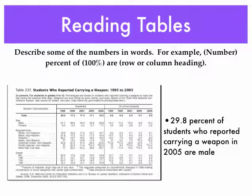You need to describe some of the numbers in words. This is a way you can write out a sentence. For example, put the number — whatever percentage of whatever — in the row or column heading. If I were looking at this particular data chart, 29.8% of students who reported carrying a weapon in 2005 are male. Remember, you don't start a sentence with a numeral. I did that for the purposes of this example to explain how you would take a percentage and explain it by looking at the row or column heading.